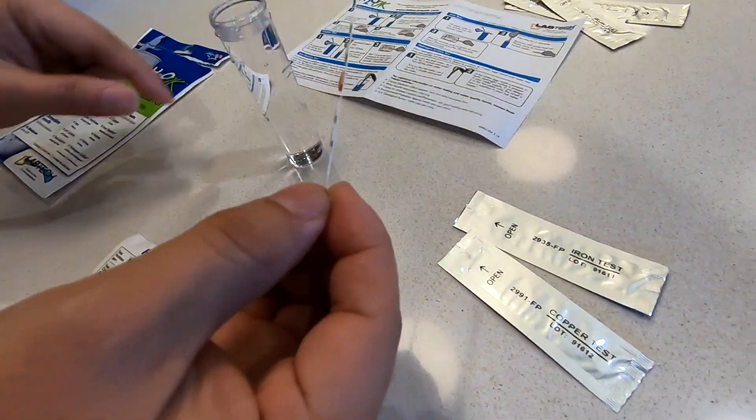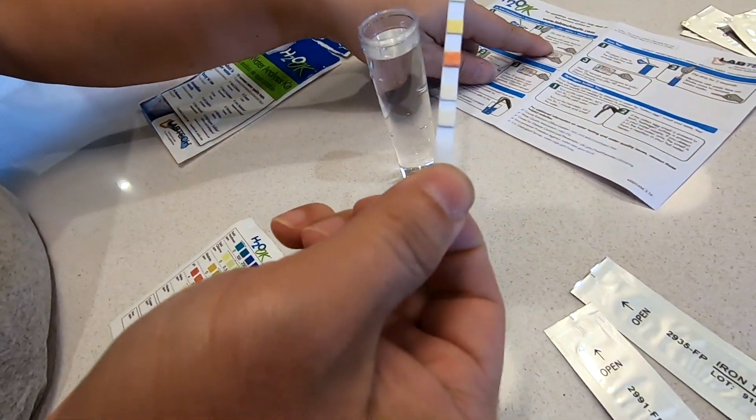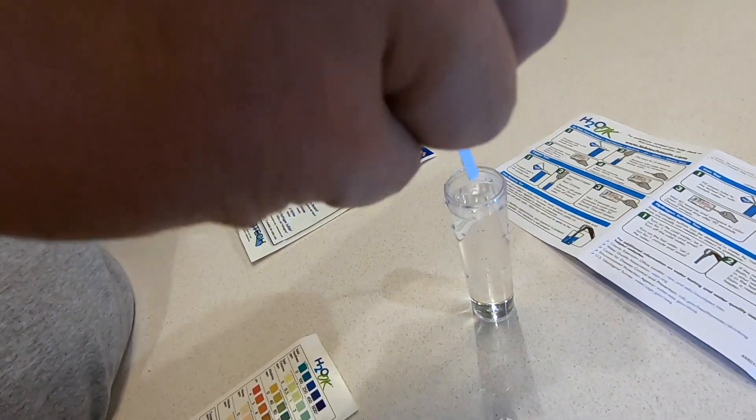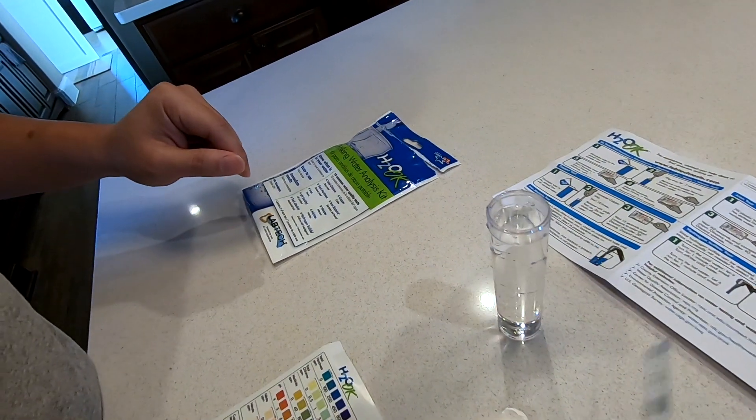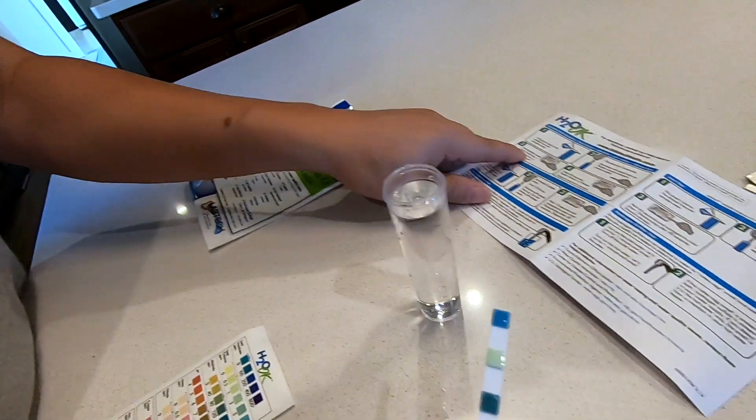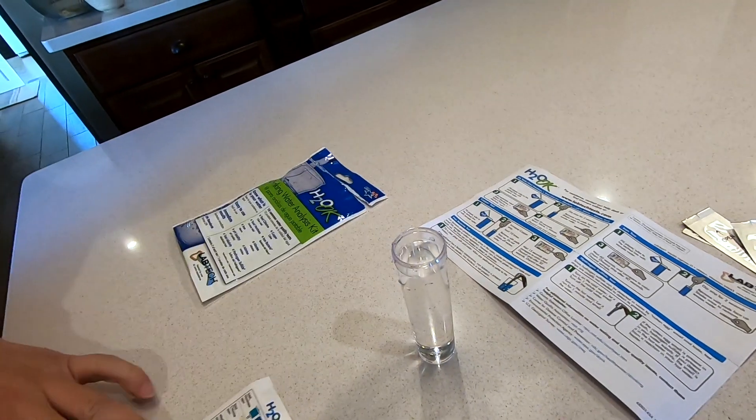It says dip for two seconds and remove with pads face up, shake once to remove excess water. So here we go. One one thousand, two one thousand, face up, shake once, and read immediately. Read for total hardness, chlorine, alkalinity, and pH.